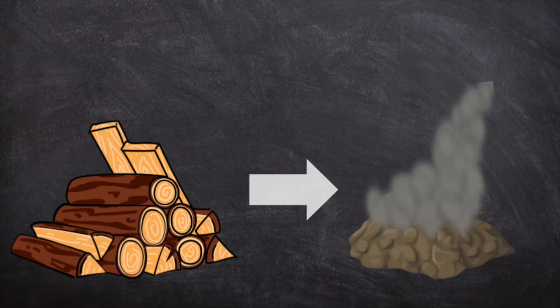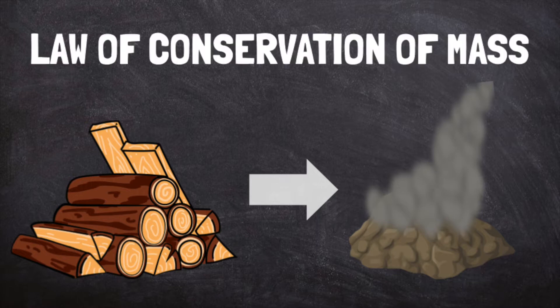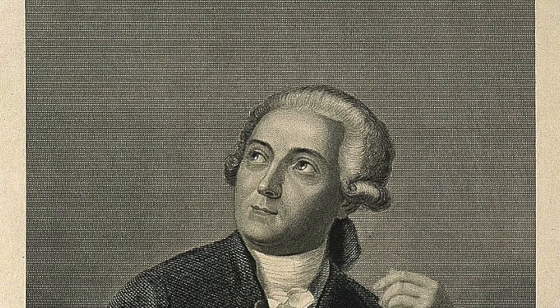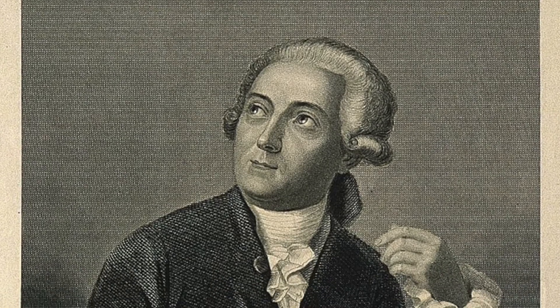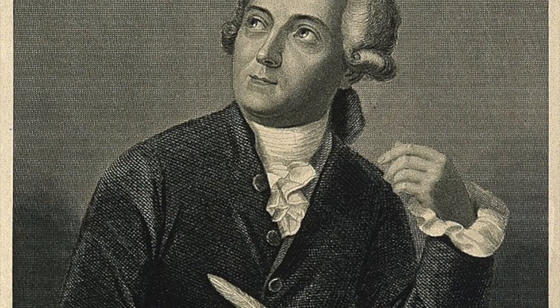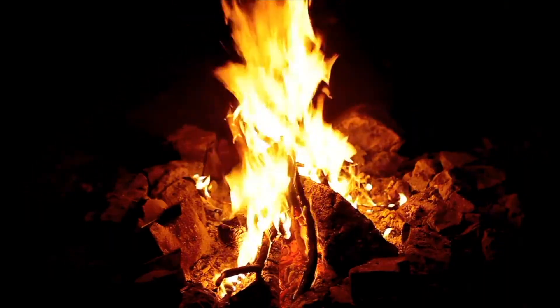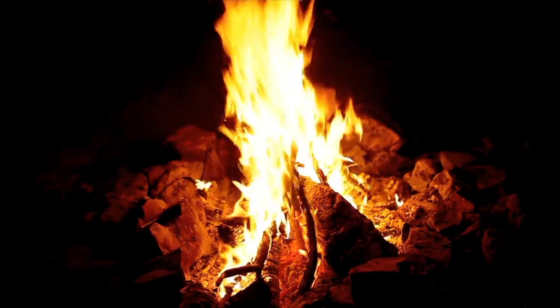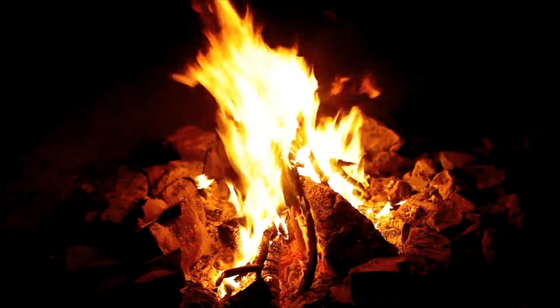Instead, they were rearranged into different molecules. This is called the law of conservation of mass. This law was discovered by a French scientist named Antoine Lavoisier in 1789. As Antoine experimented with fire, he learned that wood and oxygen undergo a chemical change.